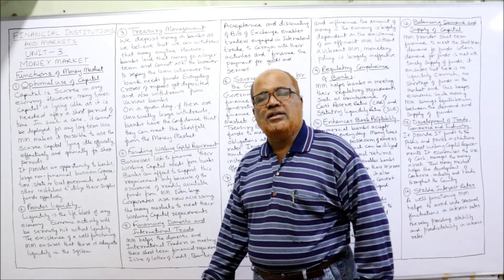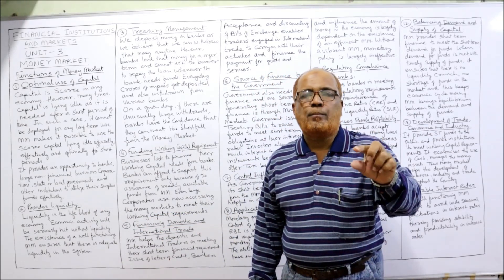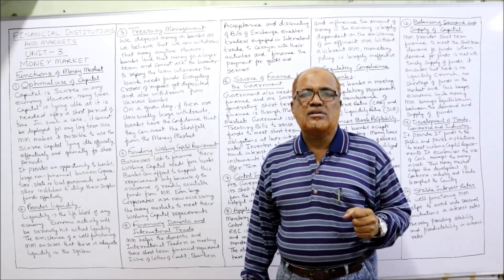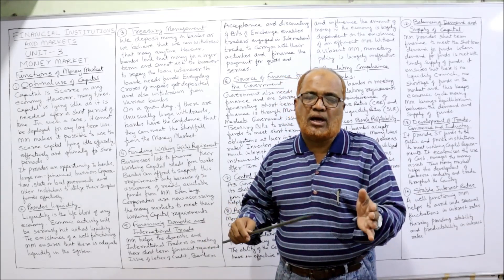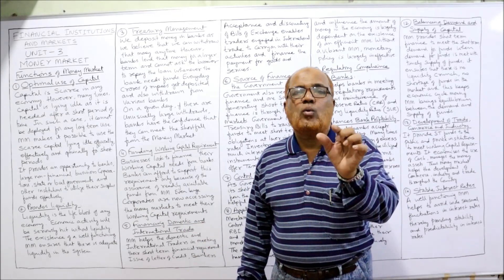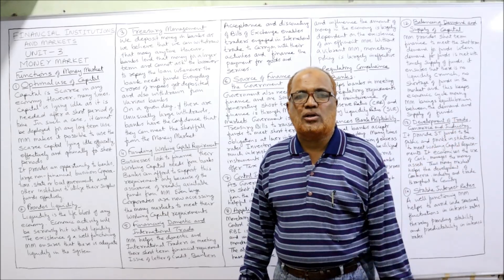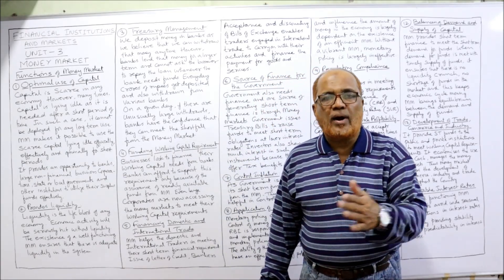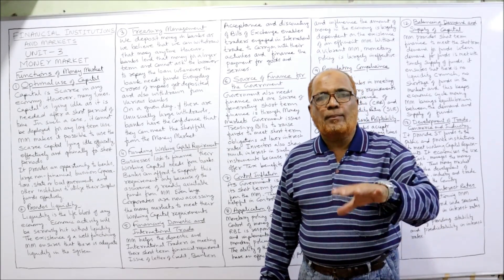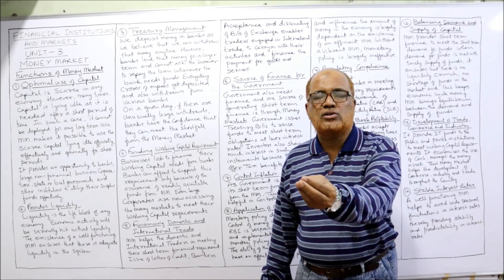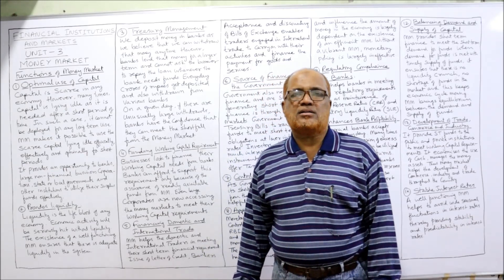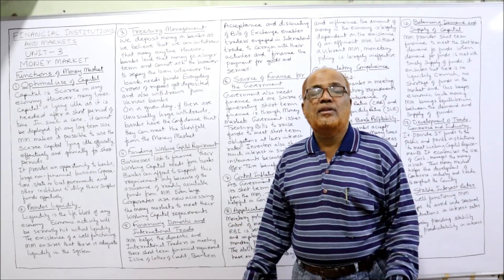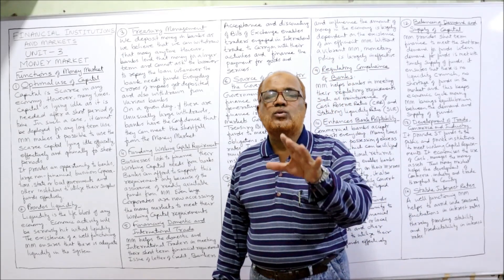The second function is providing liquidity. Liquidity means the ability of a business to pay its current obligations on time. Every organization — whether government, banks, or corporate houses — must have adequate liquidity. Money market plays a very important role in maintaining the liquidity of businesses by providing short-term funds. Banks may need immediate short-term funds for one day, two days, or a week; in that case they can approach the money market and get the required funds.